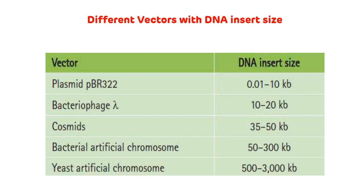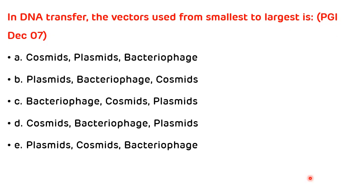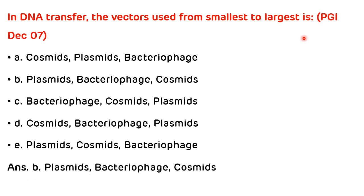Now we will see various multiple choice questions. The first question was asked in PGI December 2007: In DNA transfer, the vectors used from smallest to largest is — options are: (A) cosmid, plasmid, bacteriophage; (B) plasmid, bacteriophage, cosmids; (C) bacteriophage, cosmids, plasmid; (D) plasmid, cosmid, bacteriophage. The correct answer is B — plasmid, bacteriophage, cosmid — from smallest to largest.